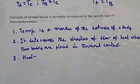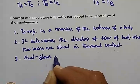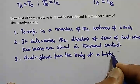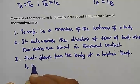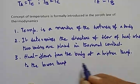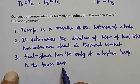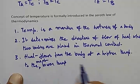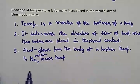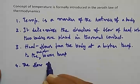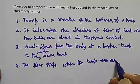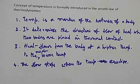Third: heat flows from the body at a higher temperature to the body at a lower temperature. Fourth: the flow stops when the temperatures equalize — when both temperatures are equal, there is no more flow of heat.